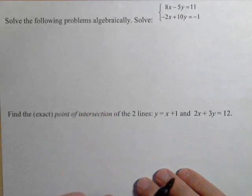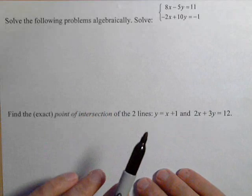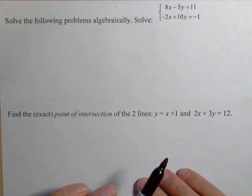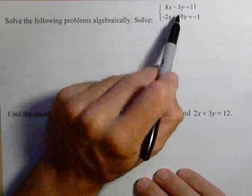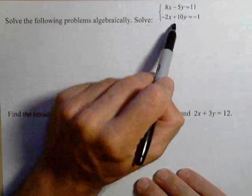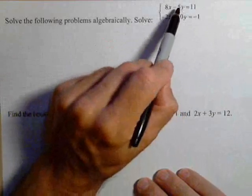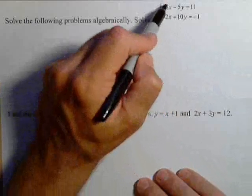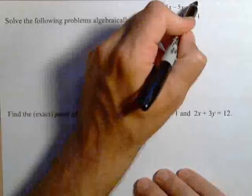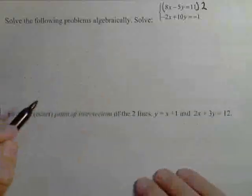In order to use elimination, what we want to do is be able to add the two equations so one of the variables eliminates. So let's check out the y, because they already have opposite signs. And in fact, if I doubled that, they would cancel. So what I'm going to have to do is double that whole equation.